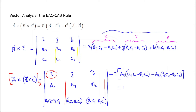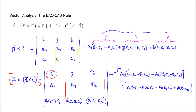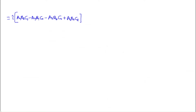Let's simplify inside the square brackets to avoid any distributive-rule issues. Distributing, I have: A_y B_x C_y − A_y B_y C_x − A_z B_z C_x + A_z B_x C_z. We're skipping the j and k (the y and z) components for now — you'll see why when we get to the end.